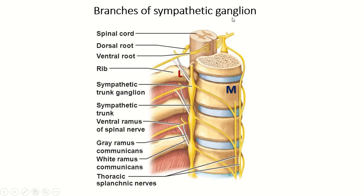The branches of the sympathetic ganglion: the ganglion has two branches. One branch goes medially, also known as the visceral nerve or splanchnic nerve. The lateral branch of the sympathetic ganglion is also known as the communicating branch. These are the gray rami communicants and the white rami communicants, and they connect with the spinal nerve.